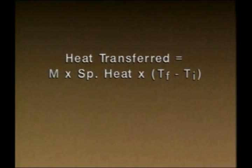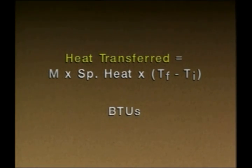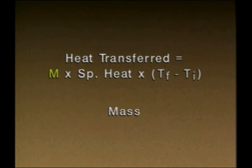The amount of heat transferred into or out of a plant process is affected by many factors. Three primary factors are the temperature change the substance undergoes, the amount of the substance, and the type of substance involved. These factors can be related in terms of a heat transfer formula. The amount of heat transferred equals M — the mass or amount of substance involved — times its specific heat, which relates to the type of substance involved.